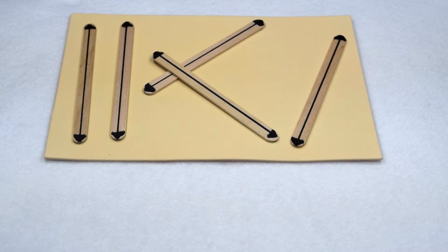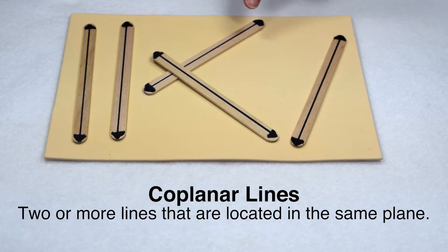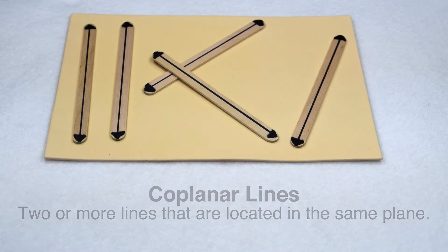Within the plane, we can find multiple types of lines. Coplanar lines are simply two or more lines that are located within the same plane. So all of these lines would be coplanar lines.